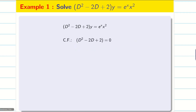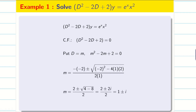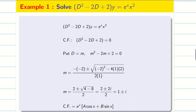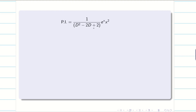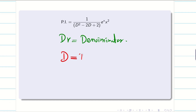As usual, find the complementary function (CF). Put d equal to m to get the auxiliary equation. This equation looks like it is not a normal equation, so use the quadratic formula to find the roots. The roots are 1 ± i. Therefore, the CF is e^x(A·cos x + B·sin x). Next, we go for the particular integral (PI). We write the PI with denominator, and let d denote the denominator. Here the value of a is 1, so d should be replaced by d plus 1.